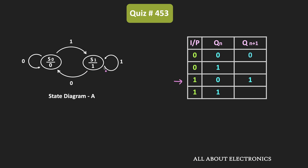On the other hand, when the flip-flop is in S1 state — in other words, when the output is equal to one — and when we apply a zero as an input, then it will do a transition from S1 to S0, and its output will become zero. Likewise, in the same state, when the input is equal to one, then it will remain in the same state, so its output will be equal to one.